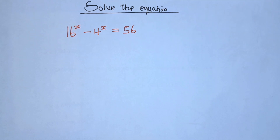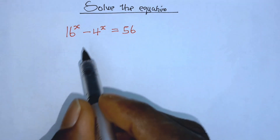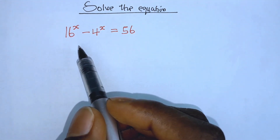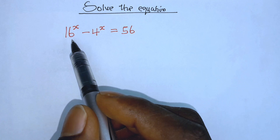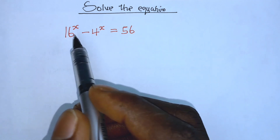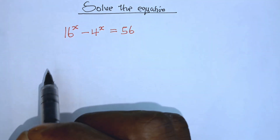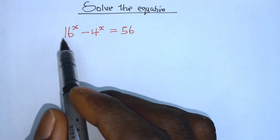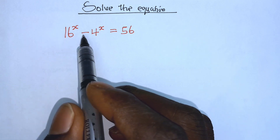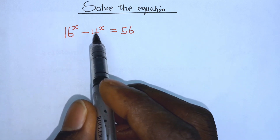Hello everyone and welcome back. Solve this equation please — if you are new here, can you subscribe, like and share the video. So let's get started. We have 16 to the power of x minus 4 to the power of x is equal to 56.